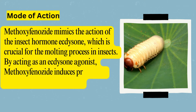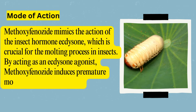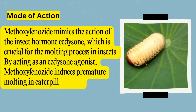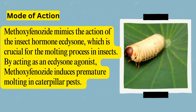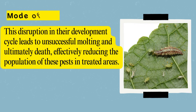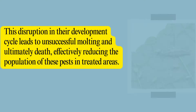This disruption in their development cycle leads to unsuccessful molting and ultimately death, effectively reducing the population of these pests in treated areas.